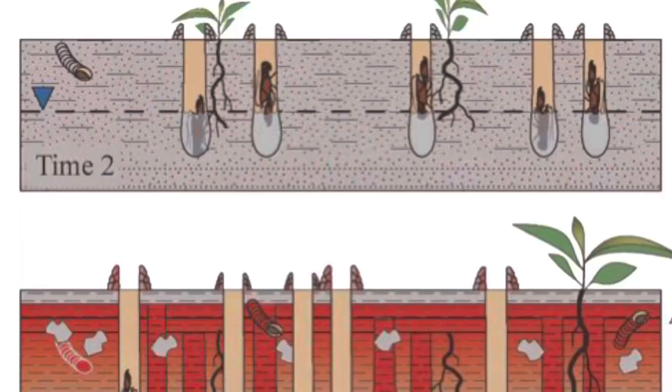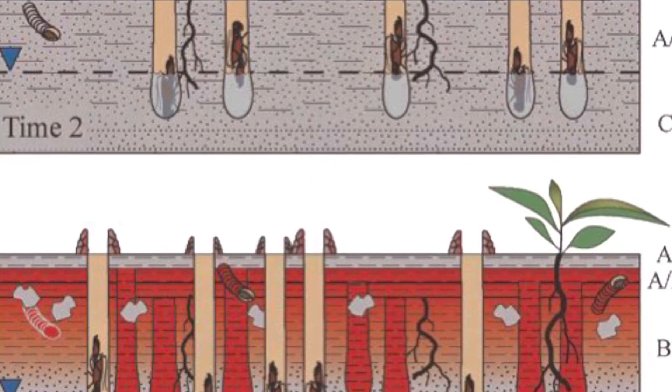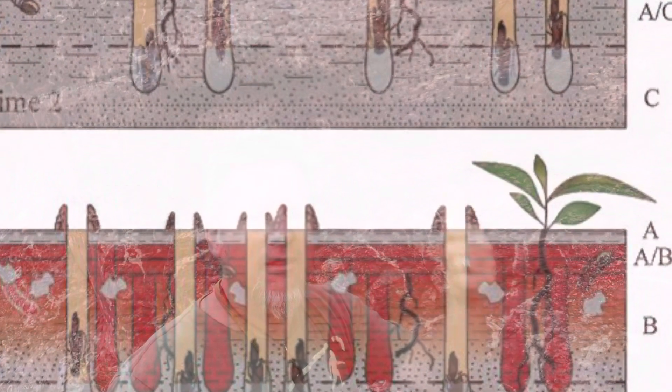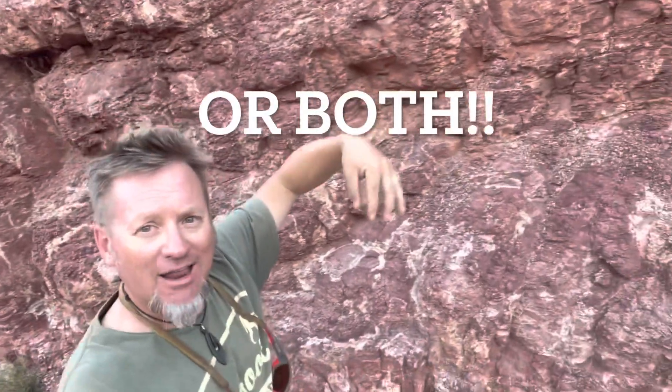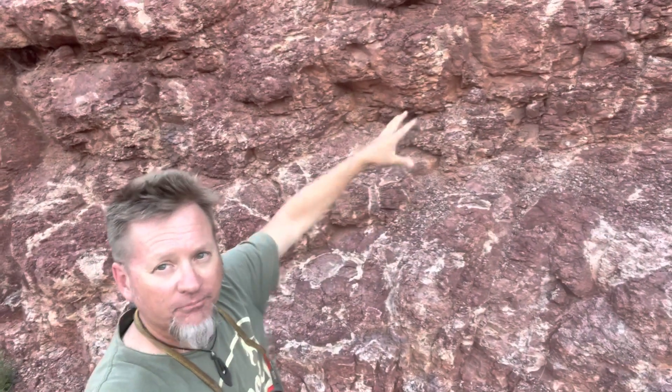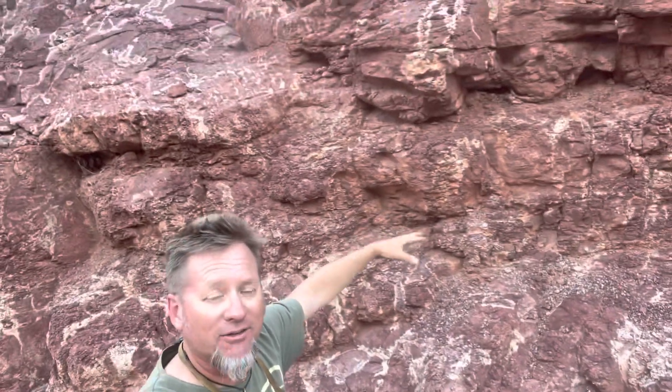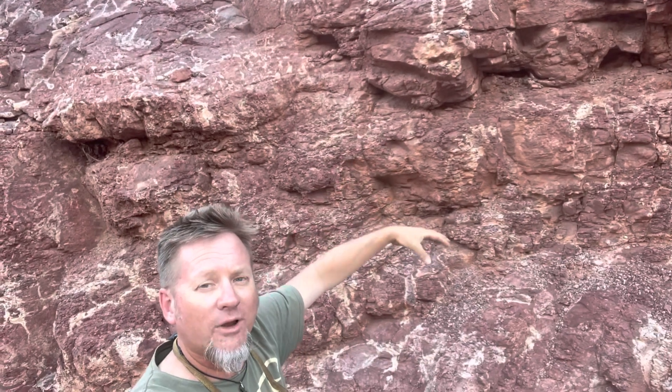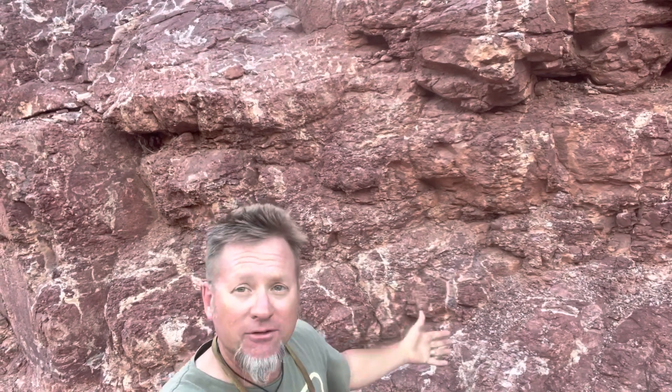Regardless of whether these are roots or crayfish burrows, they're telling us environmentally the same exact thing. They're telling us there was standing water, that the water table dropped seasonally, and that whatever the organism was — whether a plant with roots or a crayfish with gills — it had to burrow down deep, completely churning up the sediment to reach the seasonal water table. Whether it's a plant or crayfish, environmentally it's telling us the same thing.